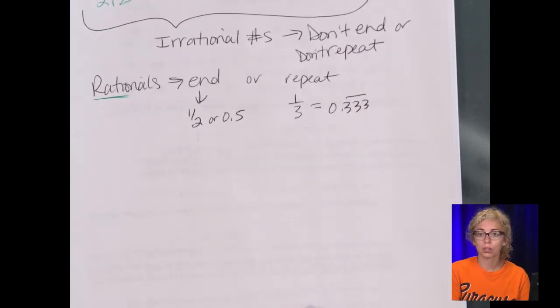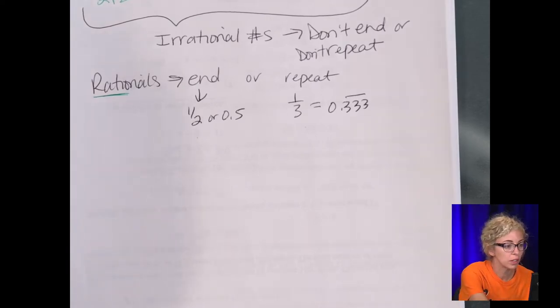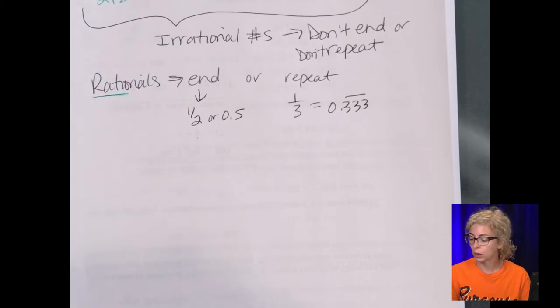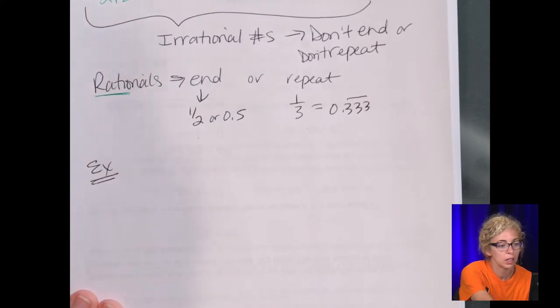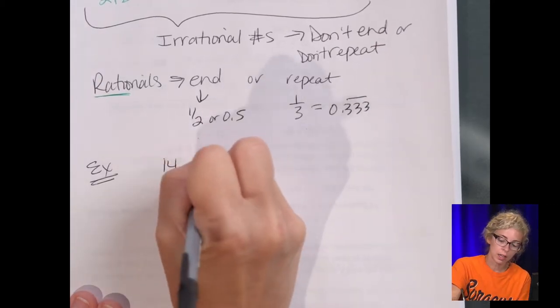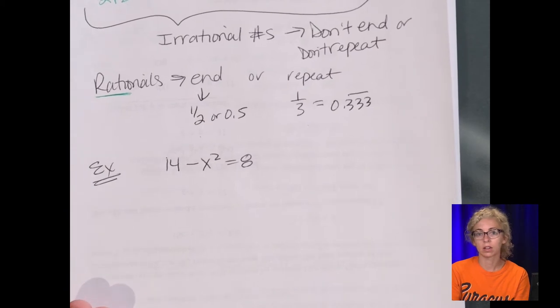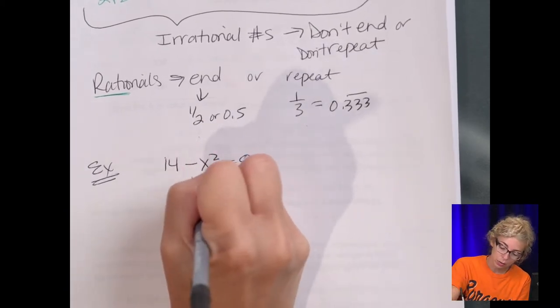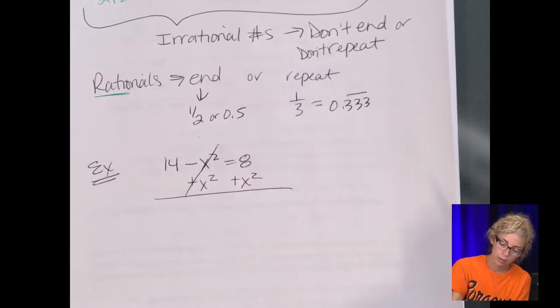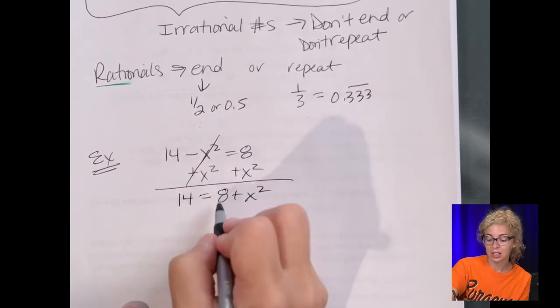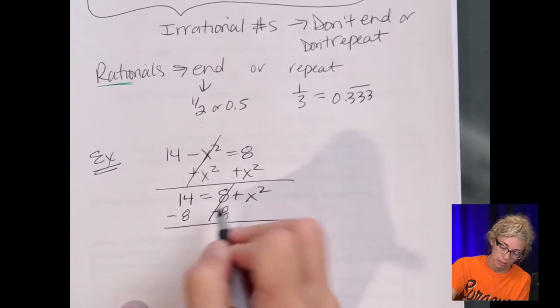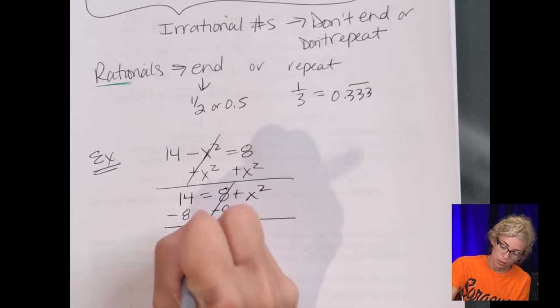Now on to solving. So the first solving quadratics with square roots, level 1. So the first example, 14 minus x squared equals 8. So again, we want the x squared to be positive. So I am going to add the x squared over. So we get 14 equals 8 plus x squared. We're looking to isolate the x squared. So subtract 8. And we get x squared equals 6.